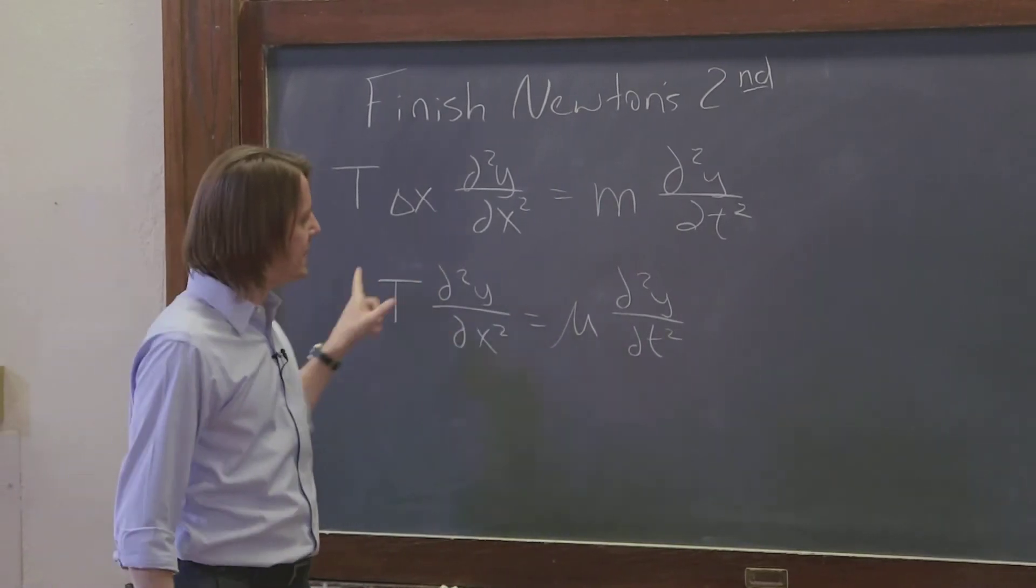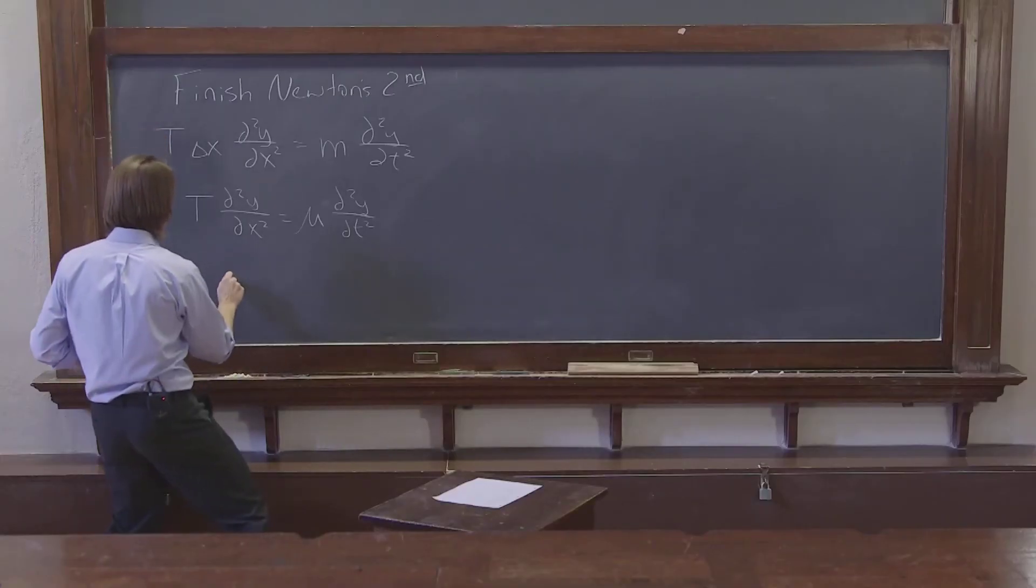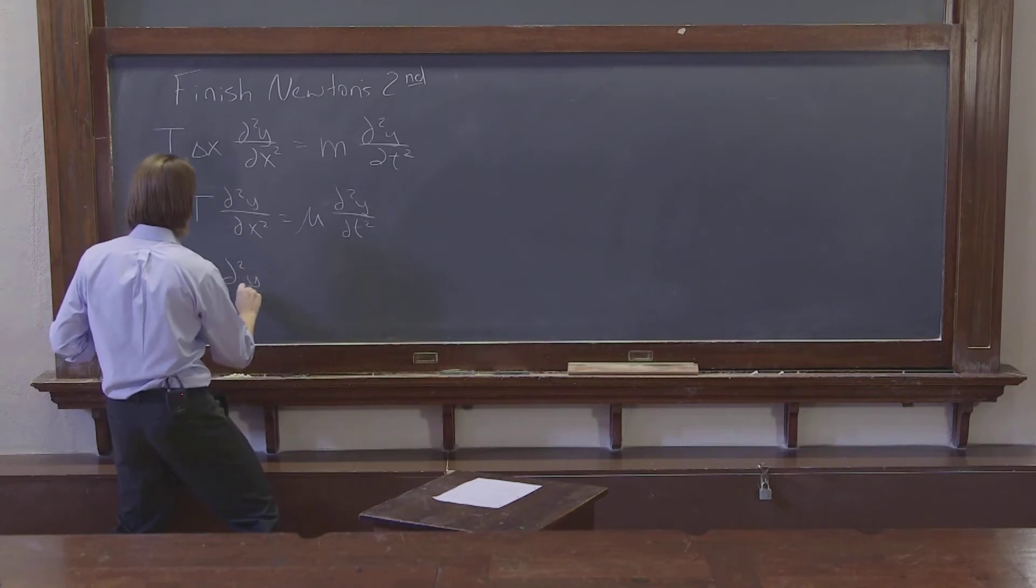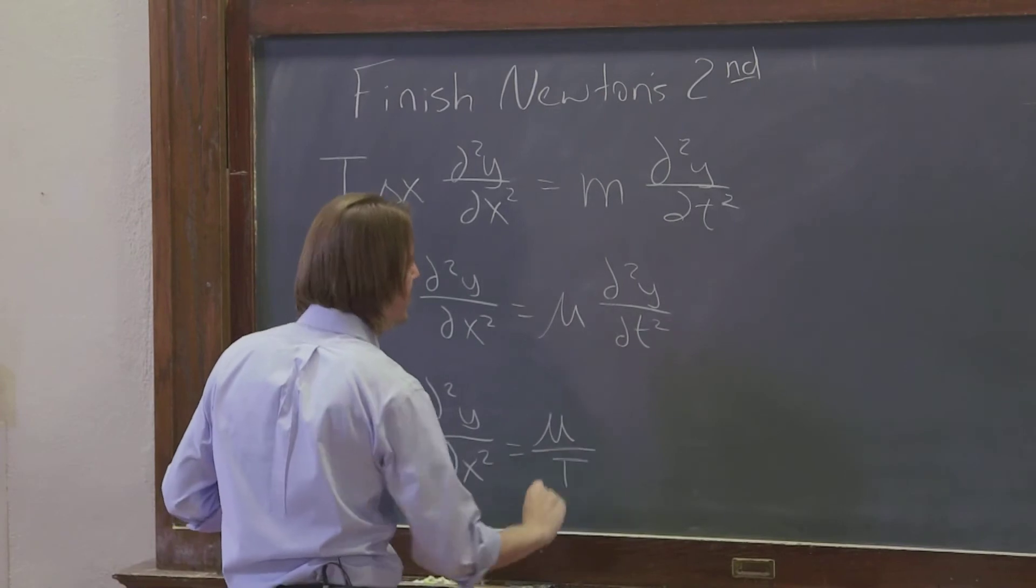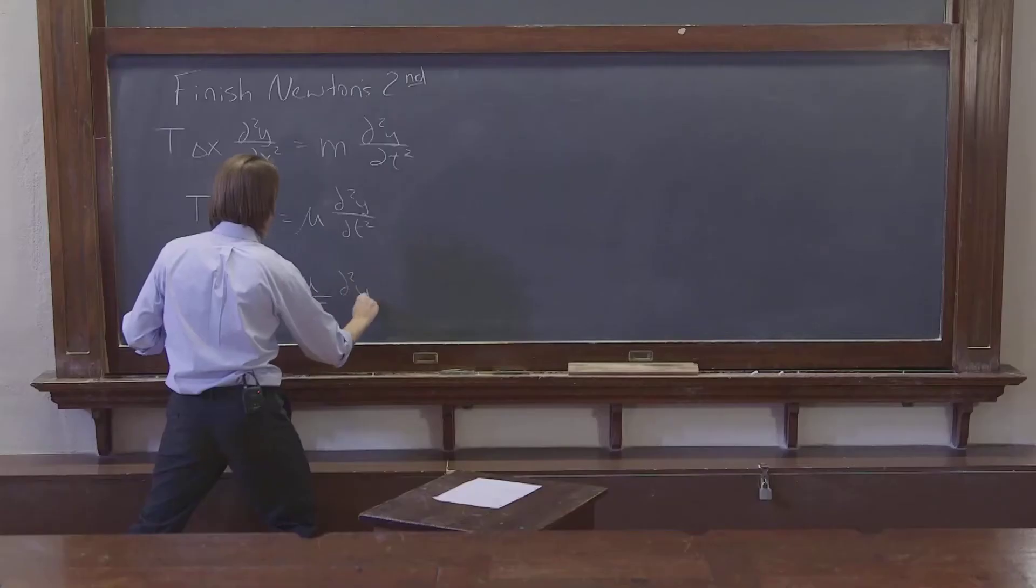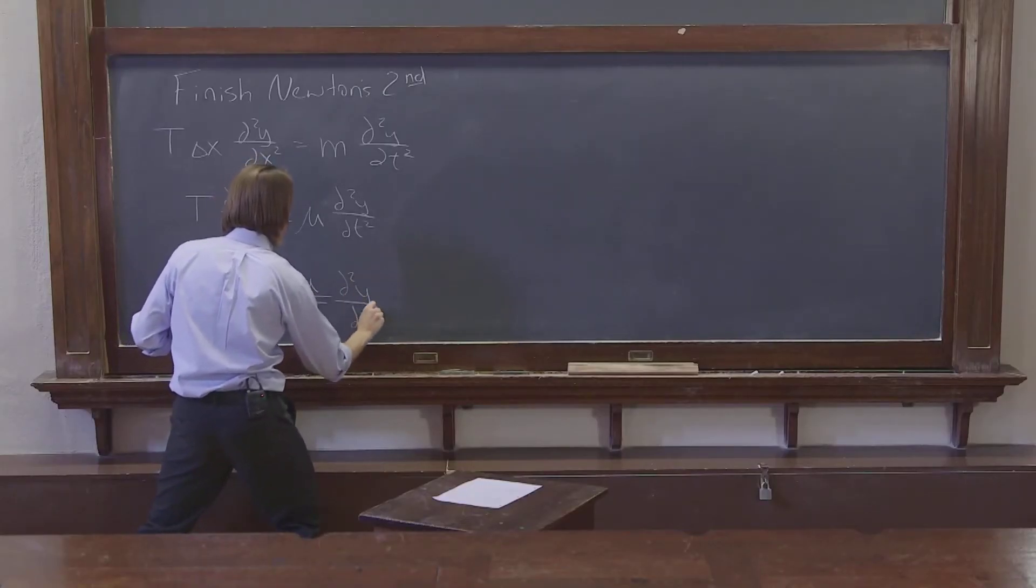And now let's see, the next thing would be to bring the T, the tension, under the mass density, and we get d²y/dx² equals mu over T times d²y/dt².